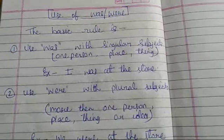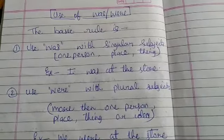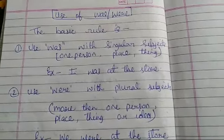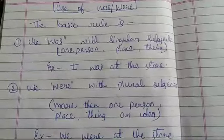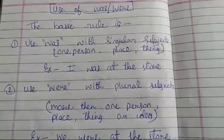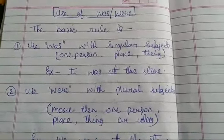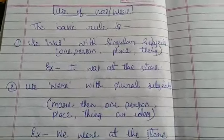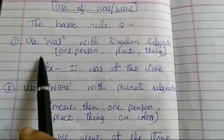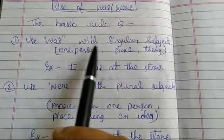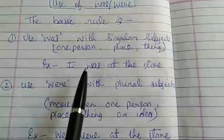As we previously discussed, I would like to summarize the things so that you get clarity on that. Where we can use 'was' — the basic rule is: use 'was' with a singular subject only, like one person.